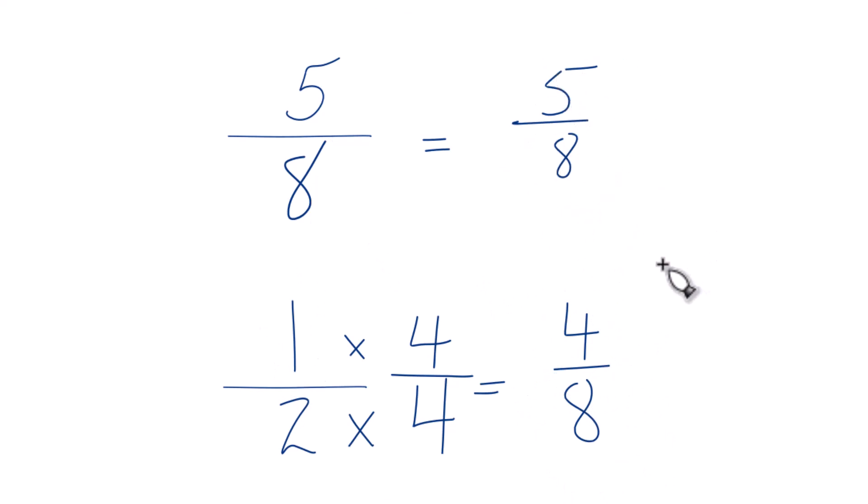So 5, that is larger than 4, so 5 eighths is larger than 4 eighths. And since 4 eighths and 1 half are the same, 5 eighths here is larger than 1 half. So that's it.